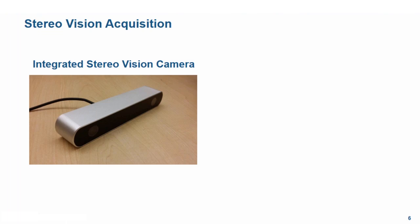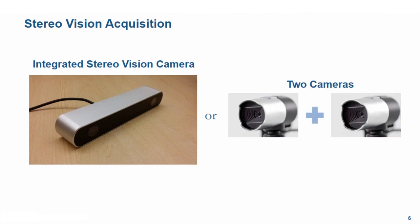Now that we have a good understanding of what StereoVision is, how it works, and how it can be useful for our applications, we need to know how to acquire StereoVision images. To acquire StereoVision images, we can either use an integrated StereoVision camera such as the ZED or the Bumblebee 2, or we can use multiple cameras, e.g. two USB cameras. The advantage of using an integrated StereoVision camera is that it offers less error than a custom multiple camera setup.